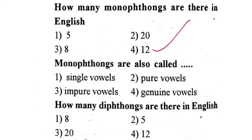Next question: Monophthongs are also called — first one, single vowels. Second one, pure vowels. Third one, impure vowels. Fourth one, genuine vowels. The correct answer is second one — pure vowels.